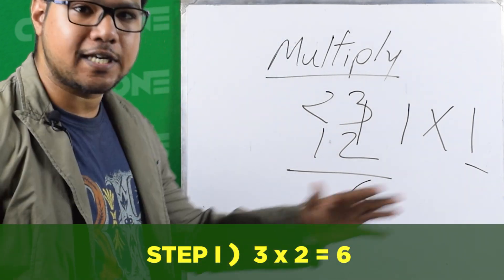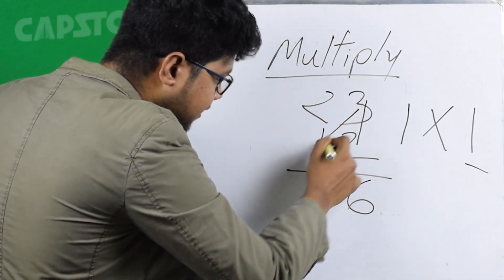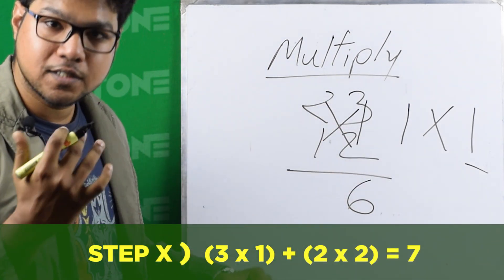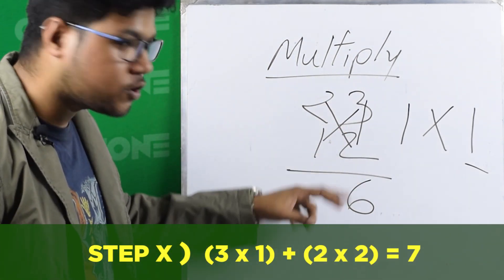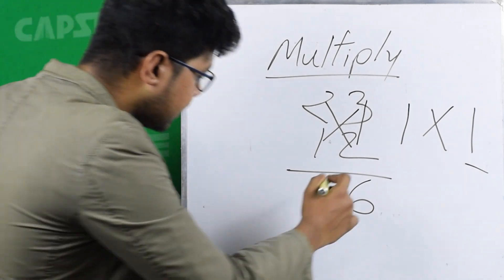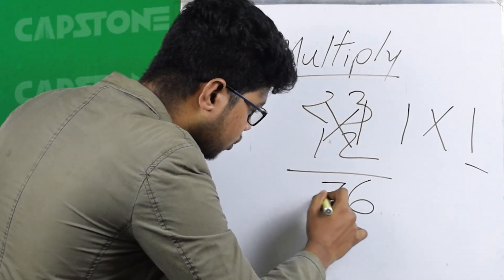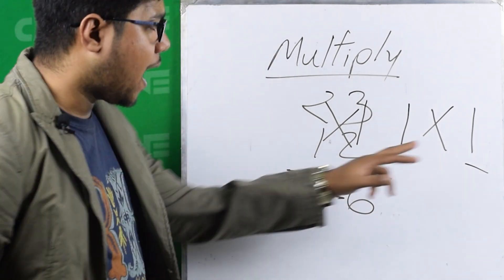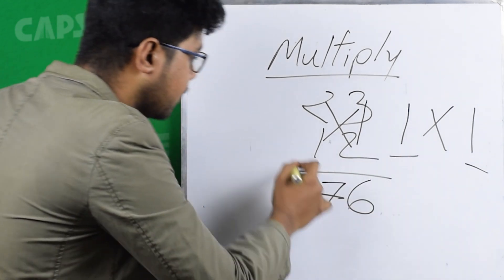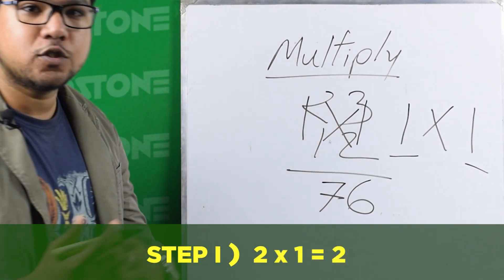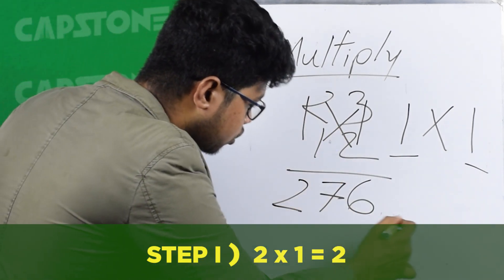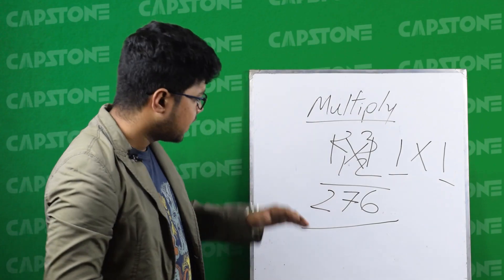Next is X. X is equal to cross-multiplication. So 3 into 1 is 3, and 2 into 2 is 4. So 3 plus 4 is 7. Next is I again — I is the tens digit. So 2 into 1 is equal to 2. We have 2, 7, 6.